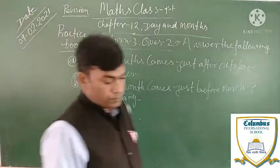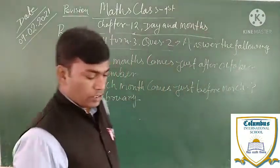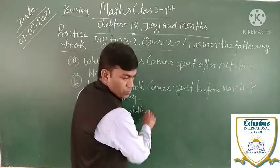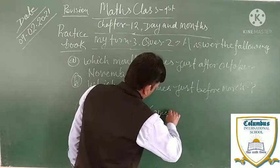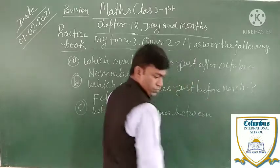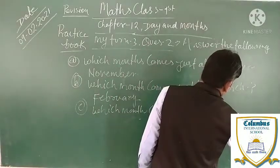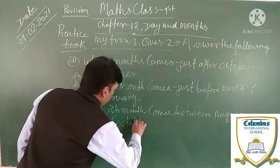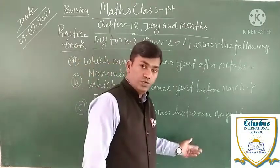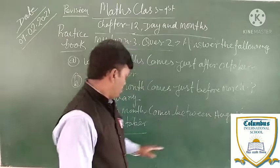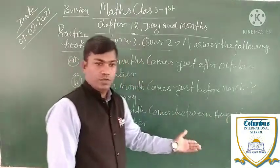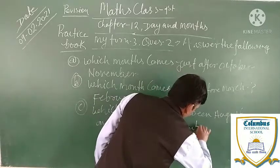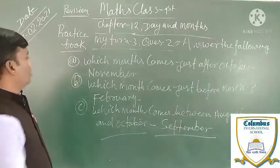Question number C: which month comes between August and October? You know that this question is asking between. August, September, October — so September is our answer. Okay? Very good.